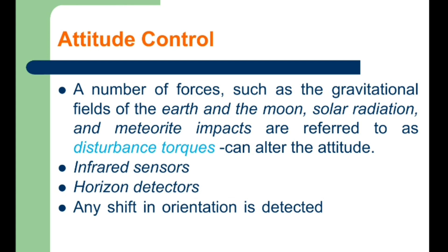These sensors are known as horizon detectors. Using four such sensors, one in each quadrant, and considering the earth as a center reference point, any shift in orientation can be detected and then the corresponding control signal is generated.